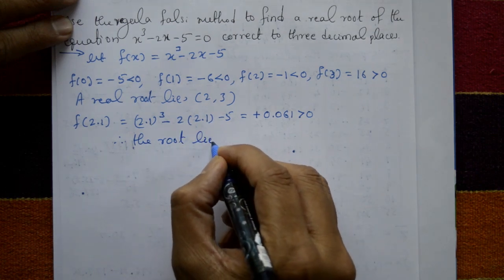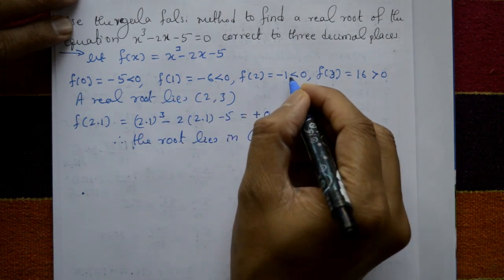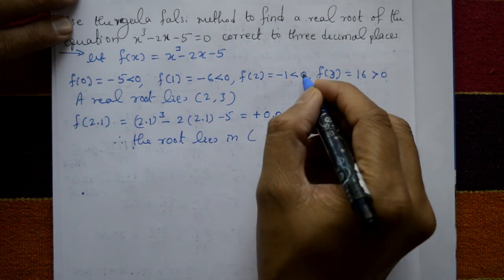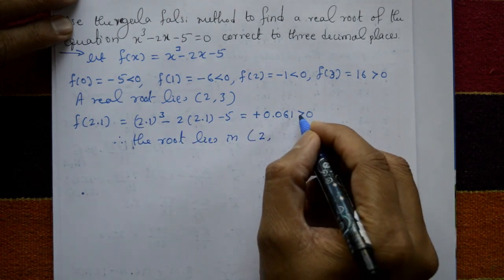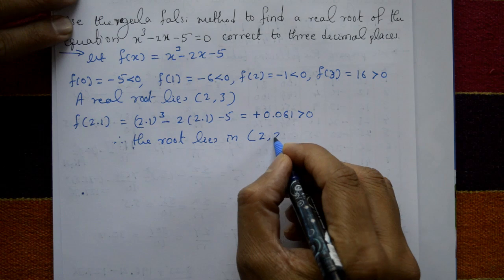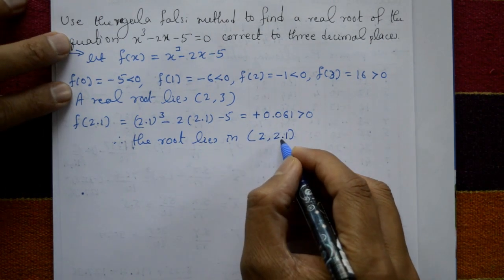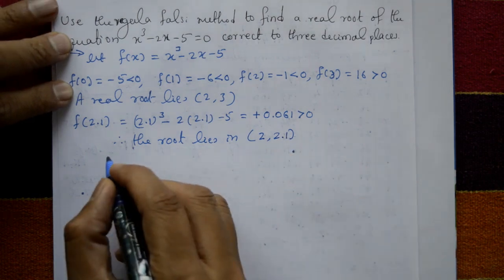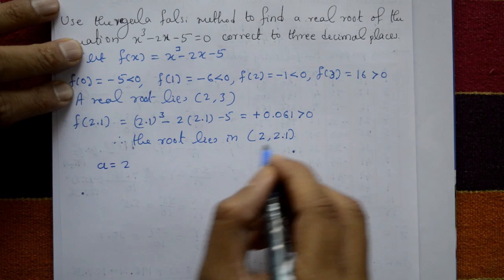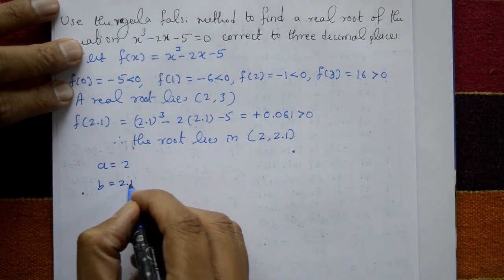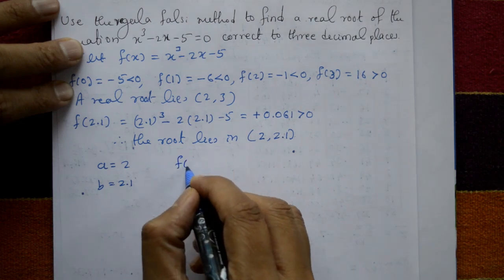f of 2.1 is equal to plus 0.061, which is close to 0 and greater than 0. The root lies between 2 and 2.1. So a is equal to 2 and b is equal to 2.1.